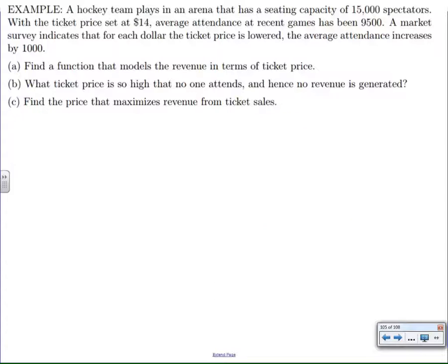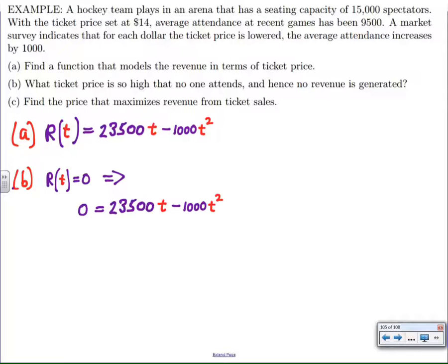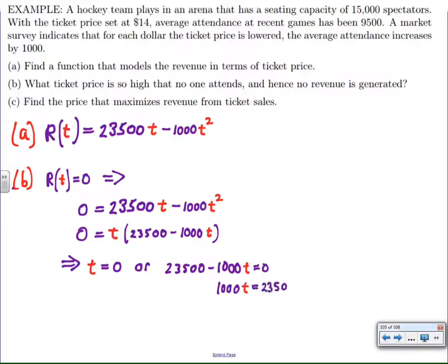Now we can actually start answering the rest of the questions. Part B, what ticket price is so high that no one wants to go? Zero revenue means no one wants to go. To get zero revenue, we can either charge zero, which makes sense, or we could charge $23.50. If we charge $23.50, nobody will go to the hockey game. So $23.50 is too much to charge.